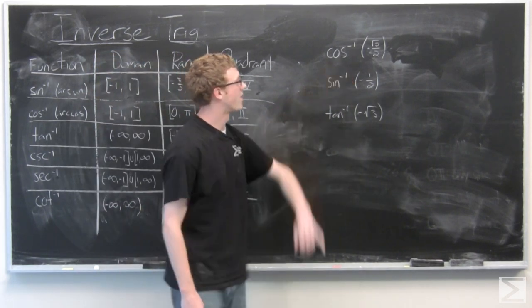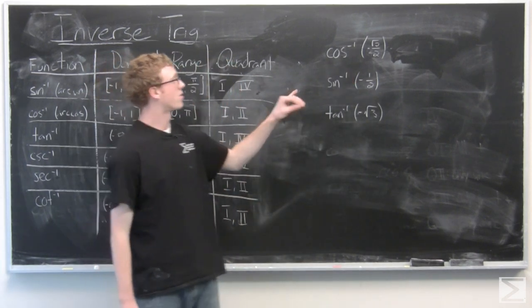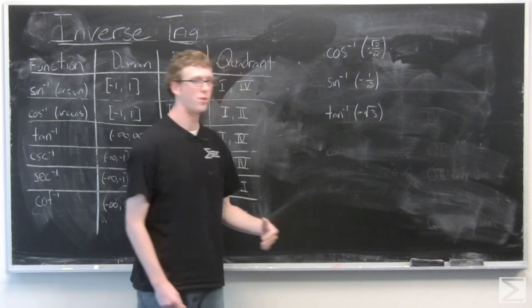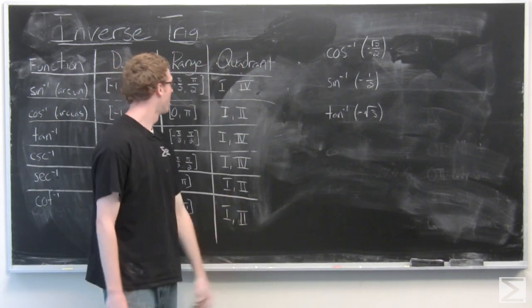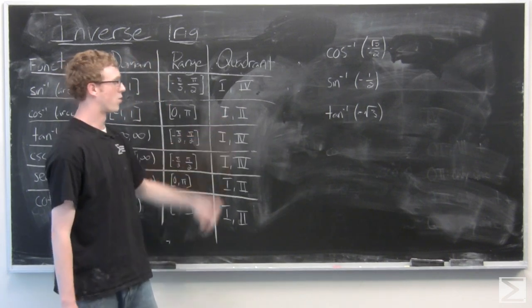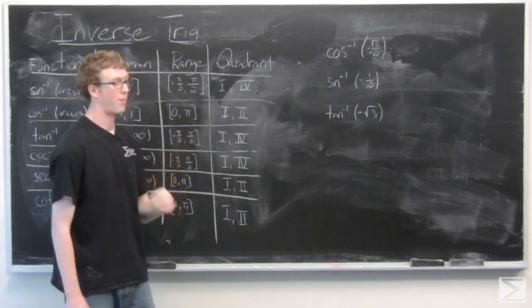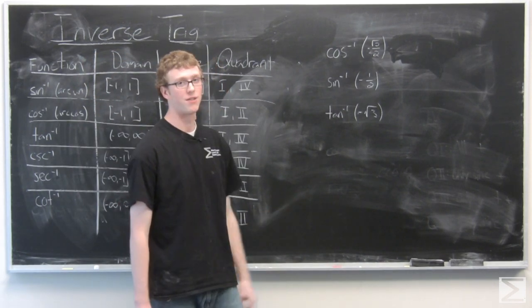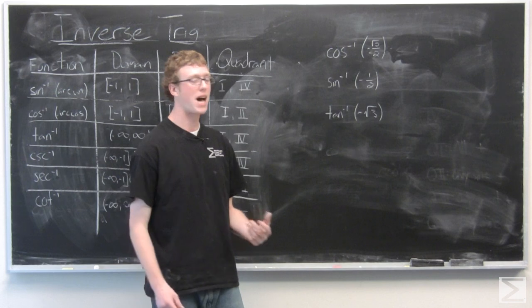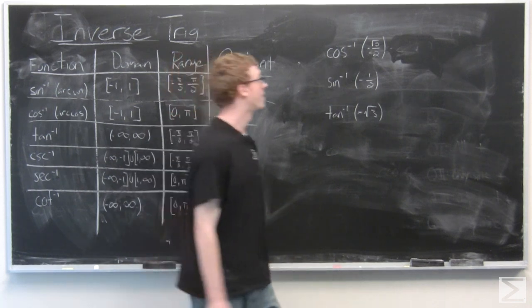So we're asked to find inverse cosine of negative square root of 2 over 2. Well, we know that cosine is negative in quadrants 2 and 3 and we take a look at our table and see that we're looking for quadrant 2 because the range is 0 to π. So we can immediately just go ahead and figure out that that is 3π over 4 radians.